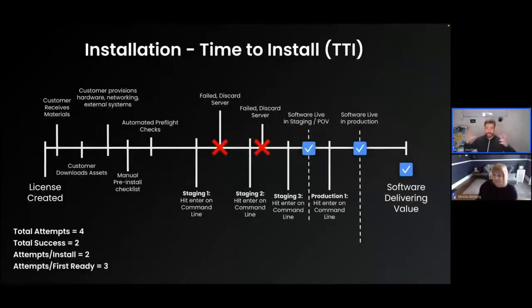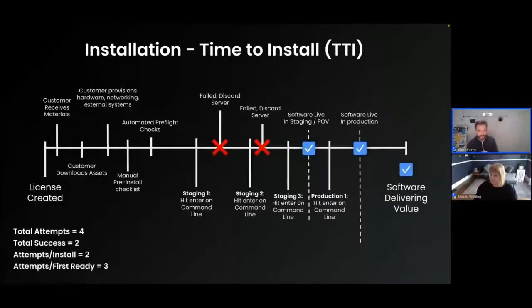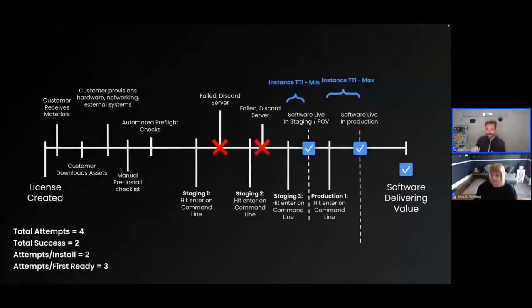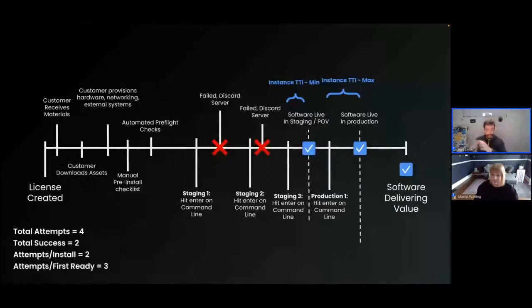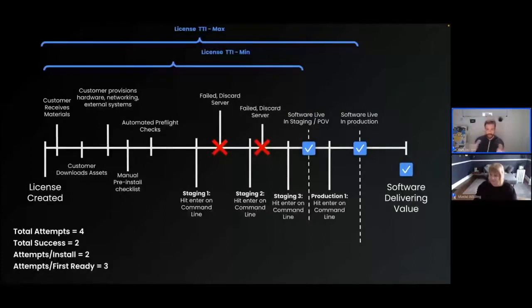In addition to whether you were successful on the first or fourth attempt, it's also helpful to know how long it took to get up and running — because maybe it's one attempt but it takes six months. There are a few flavors of time to install. The first is instance time to install: one server or one Kubernetes namespace hitting enter on the command line — how fast until your software is up and running. A customer may run multiple instances, so you might look at minimum, maximum, and median. The other is going from intent to deploy all the way through to software running — in Replicated, that's when a license is created as the declaration of intent to deploy.